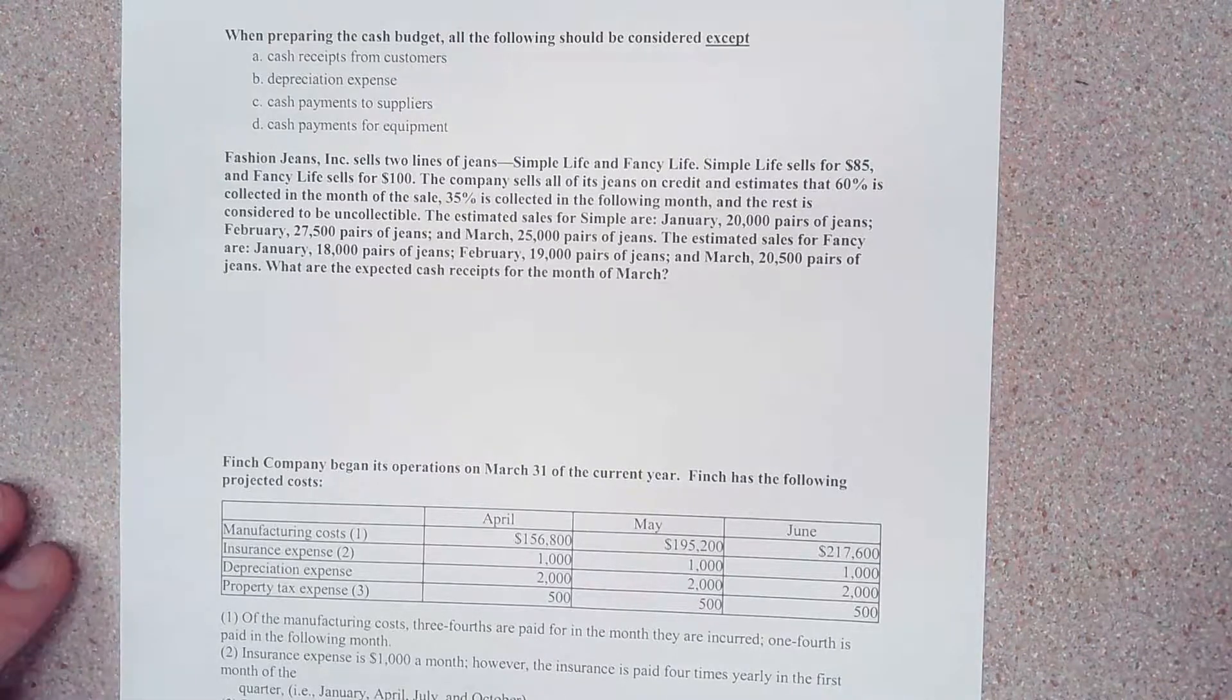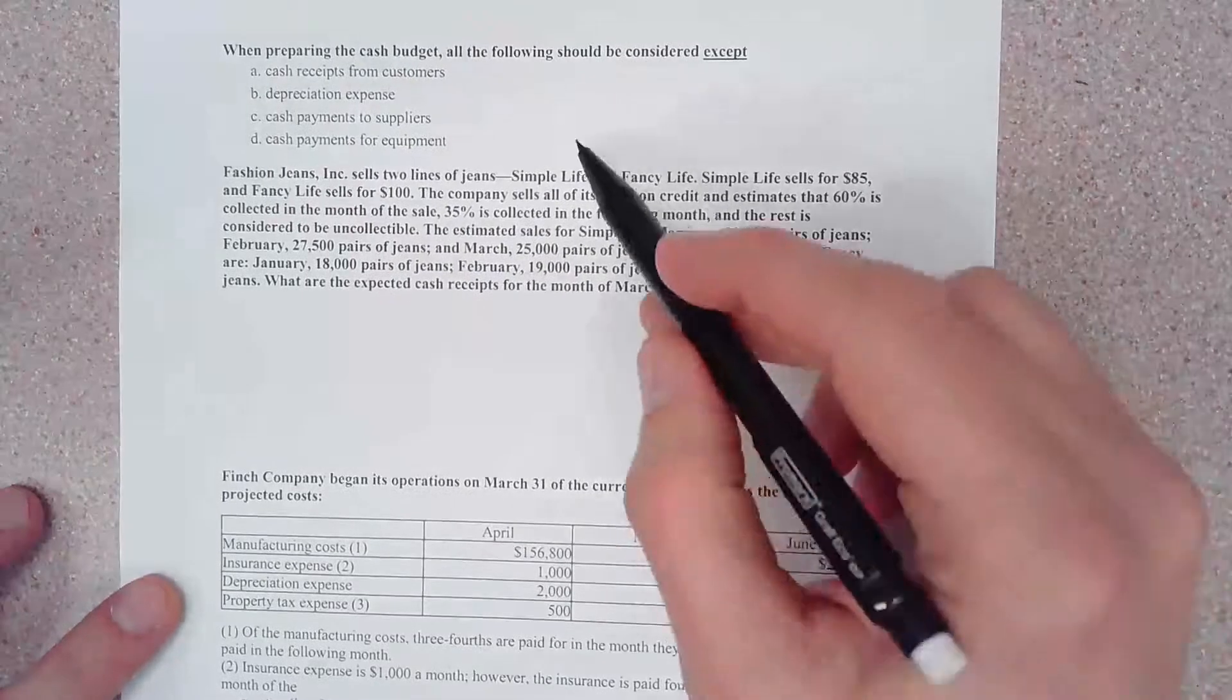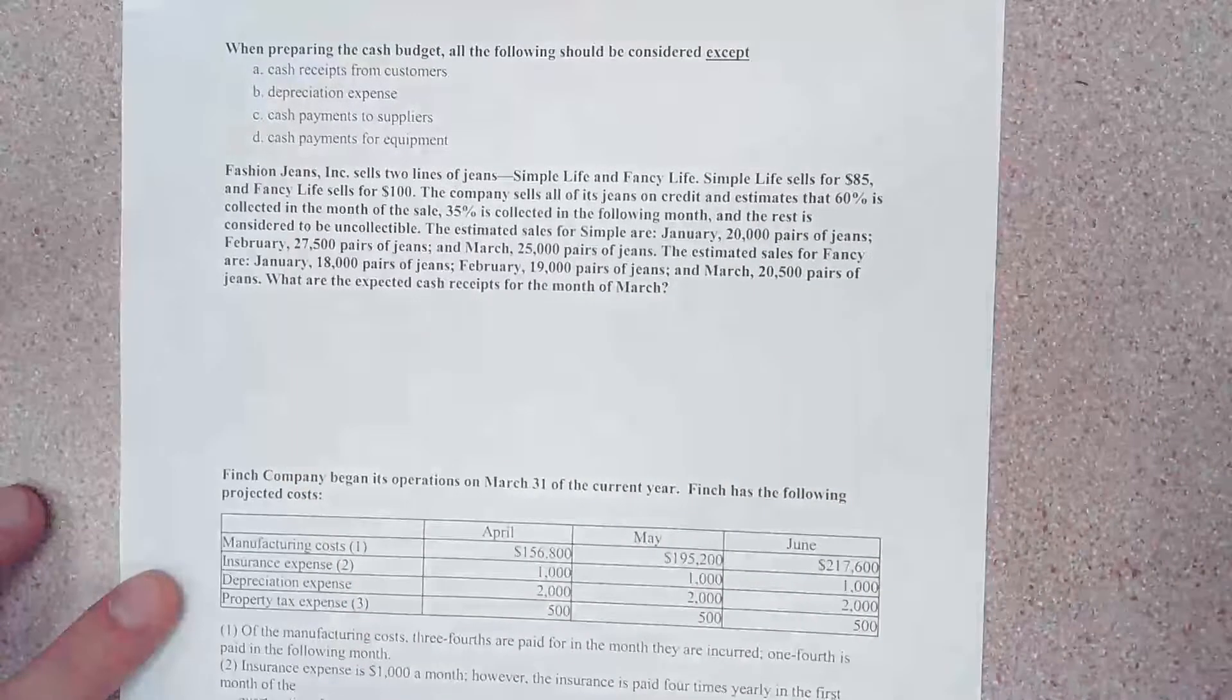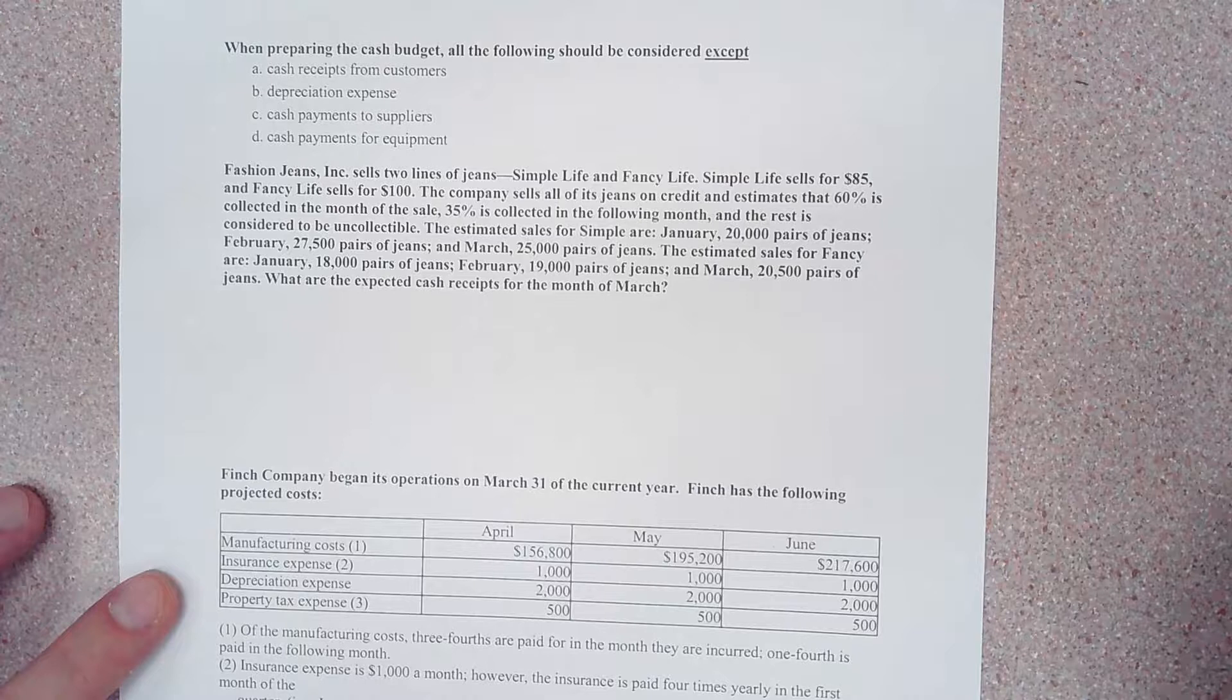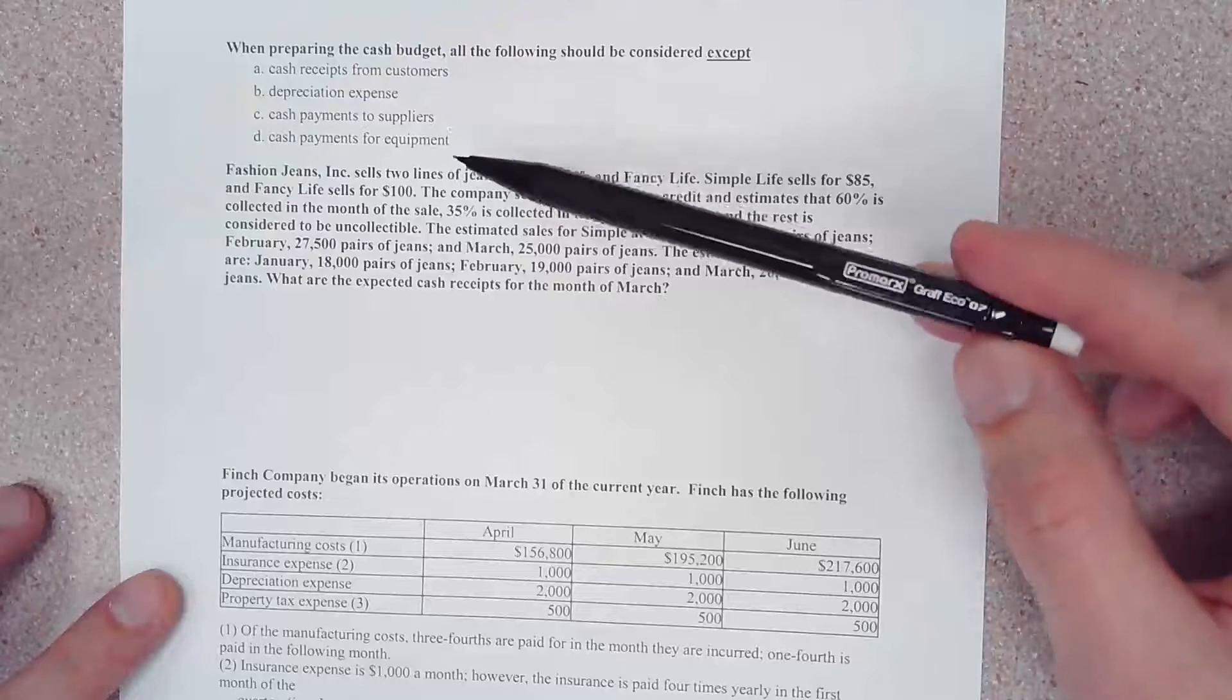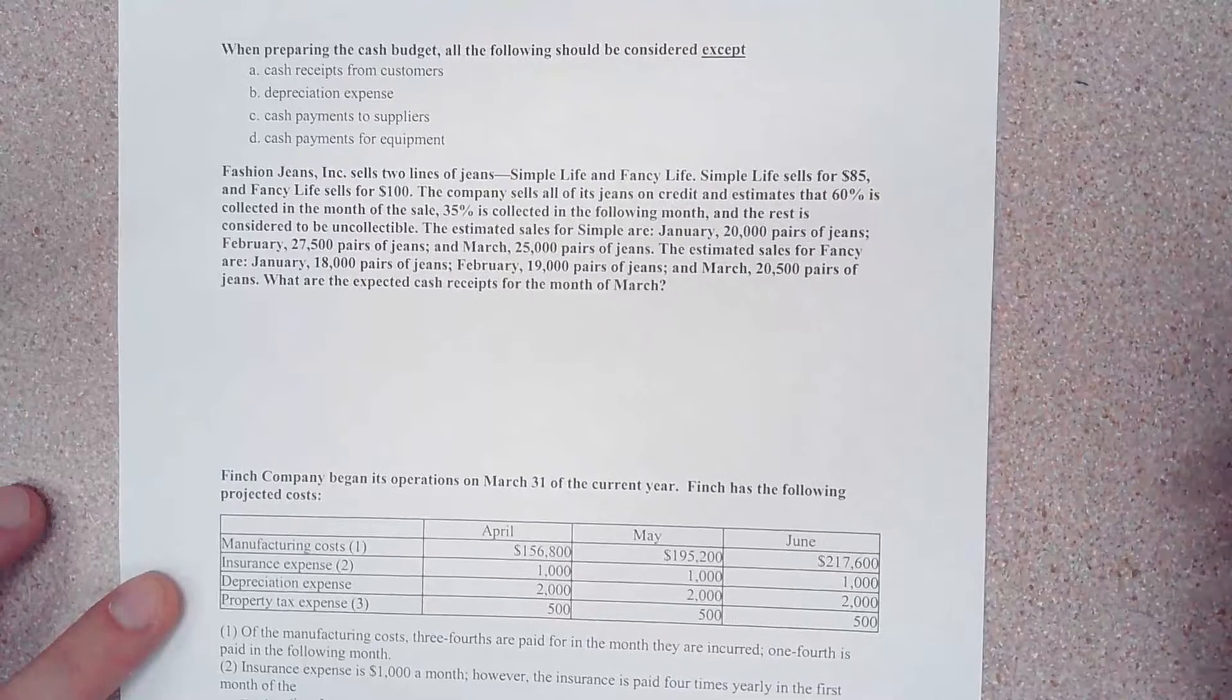All right, so let's do some problems related to the cash budget. Our first item here is a multiple choice question. It says when preparing the cash budget, all of the following should be considered except: cash receipts from customers, depreciation expense, cash payments to suppliers, and cash payments for equipment.